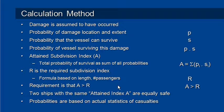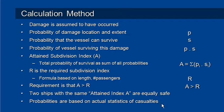For our vessel to comply, the requirement is that our attained index A must be greater than our required index R. The logic of this probabilistic approach is that two vessels with the same attained index A are considered to be equally safe. The data used to calculate the probabilities of damage and survival is based on statistics that have been collected from actual casualties.